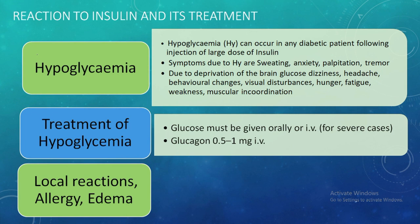Whenever insulin enters the body, different types of reactions can occur — these are the side effects of insulin. The first one is hypoglycemia, which occurs when a large dose of insulin is injected. Symptoms include sweating, anxiety, palpitation, tremor, dizziness, and headache due to deprivation of blood glucose.